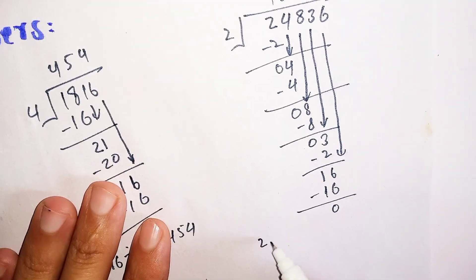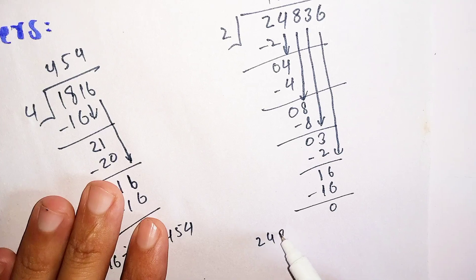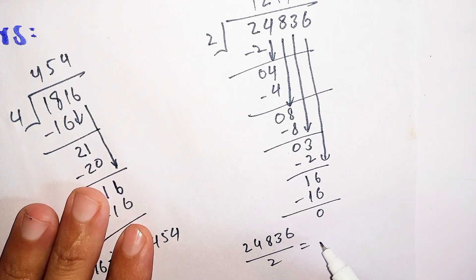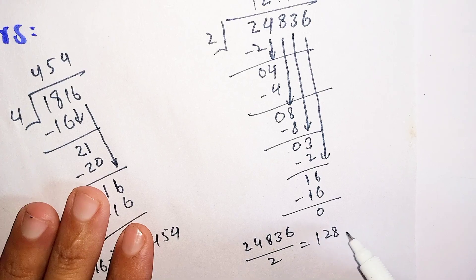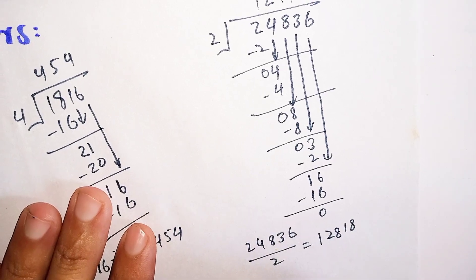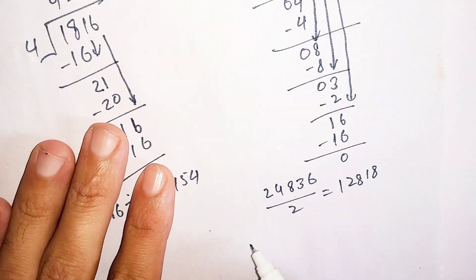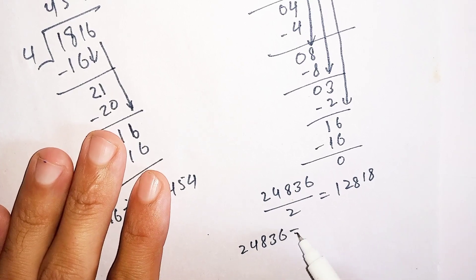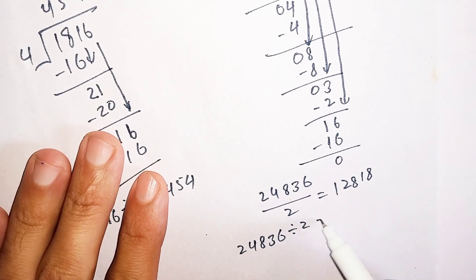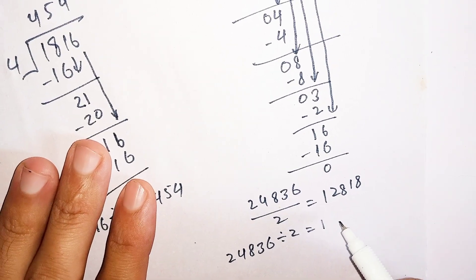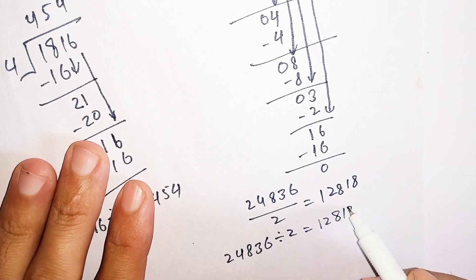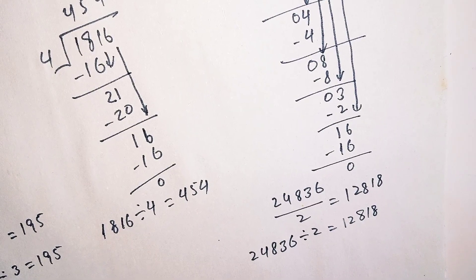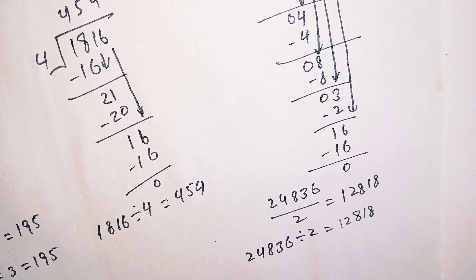So we can say that whenever we are dividing 24836 by 2, the answer will be 12,418. Simply, 24836 divided by 2 is equal to 12,418. If you have liked the video, subscribe to our YouTube channel for more such interesting videos.